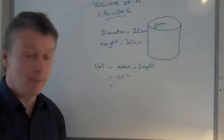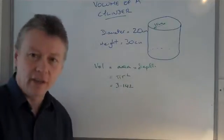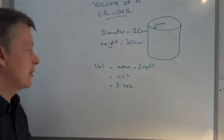Pi is usually given to you on the exam paper and usually is 3.142. Very occasionally you might see it as 22 over 7.